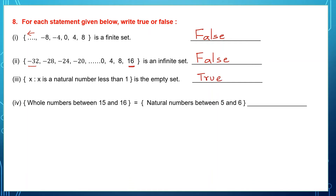Question 4 says: whole numbers between 15 and 16 equals natural numbers between 5 and 6. What are the whole numbers between 15 and 16? Nothing — it's empty. And natural numbers between 5 and 6? Again nothing — it's empty. So they are equal, and this statement is true.